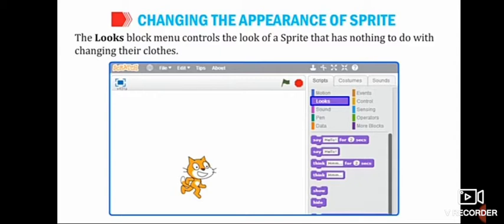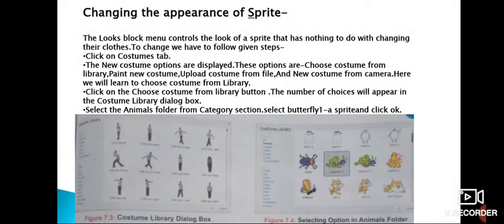Changing the appearance of a sprite. The Looks block menu controls the look of a sprite that has nothing to do with changing their clothes. When you start a new Scratch project, it begins with a cat sprite. The Looks block menu controls the look of a sprite. To change the appearance of a sprite, we have to follow given steps. Click on Costumes tab. The new costume options are displayed. These options are: Choose Costume from Library, Paint New Costume, Upload Costume from File and New Costume from Camera.